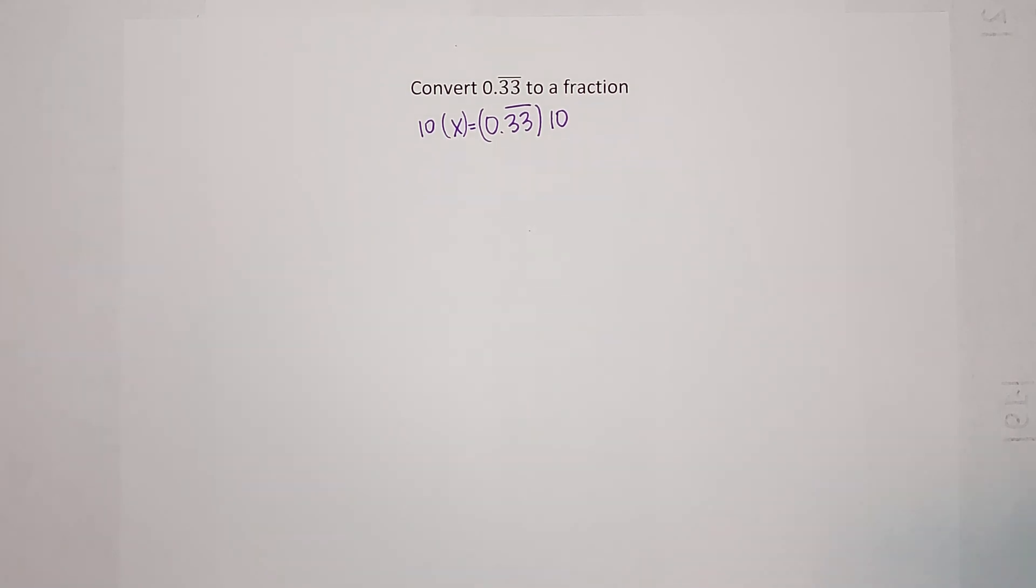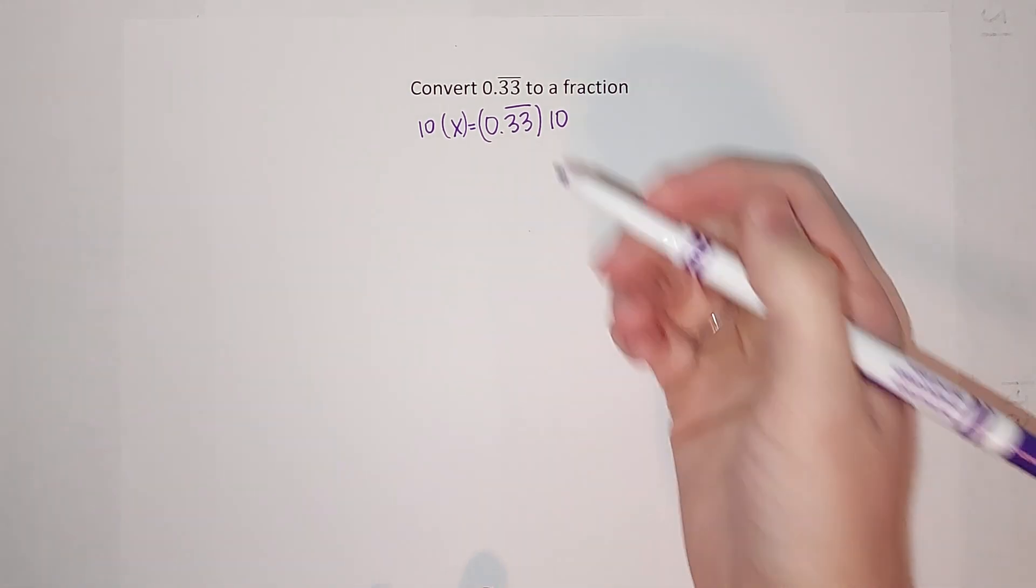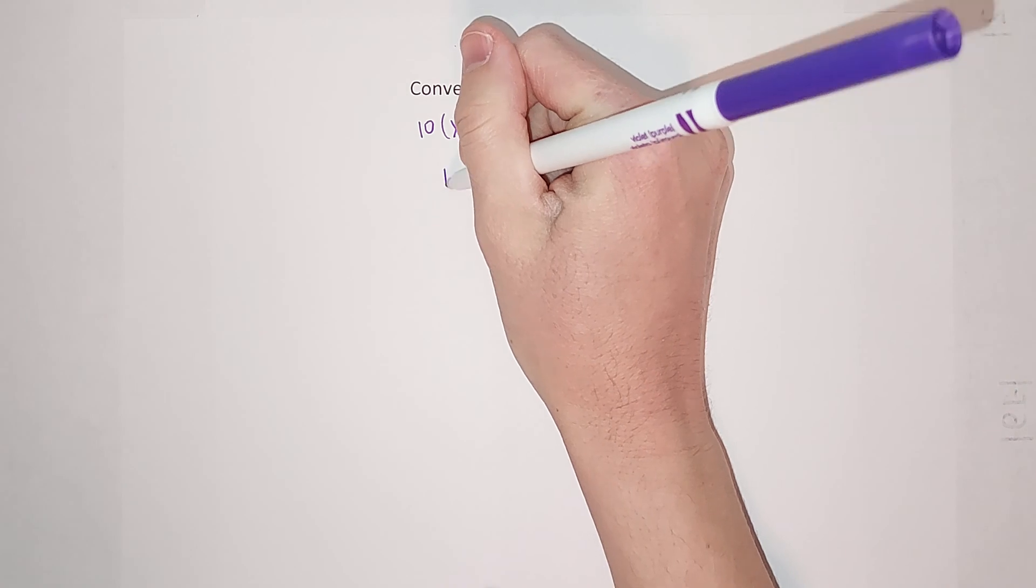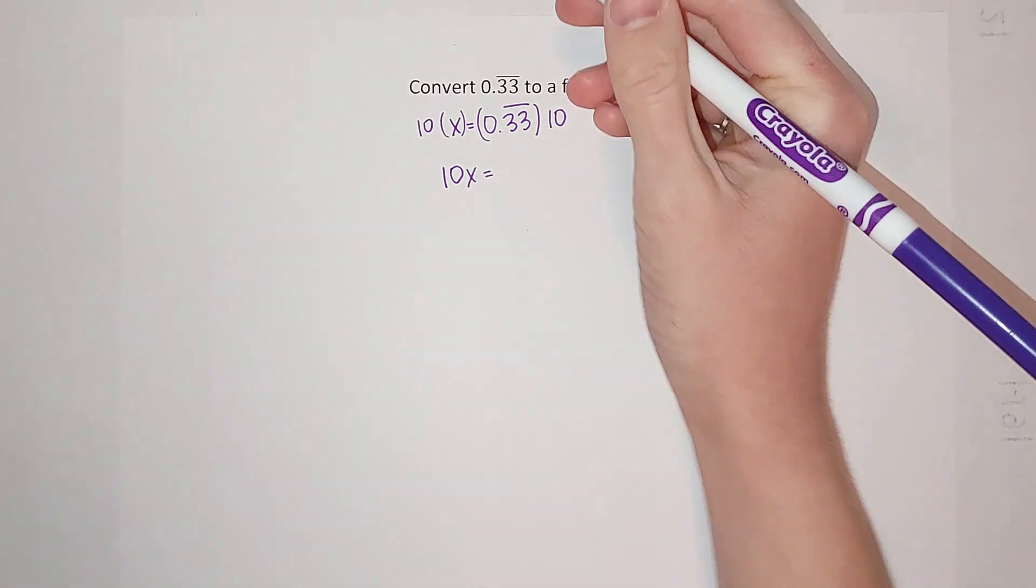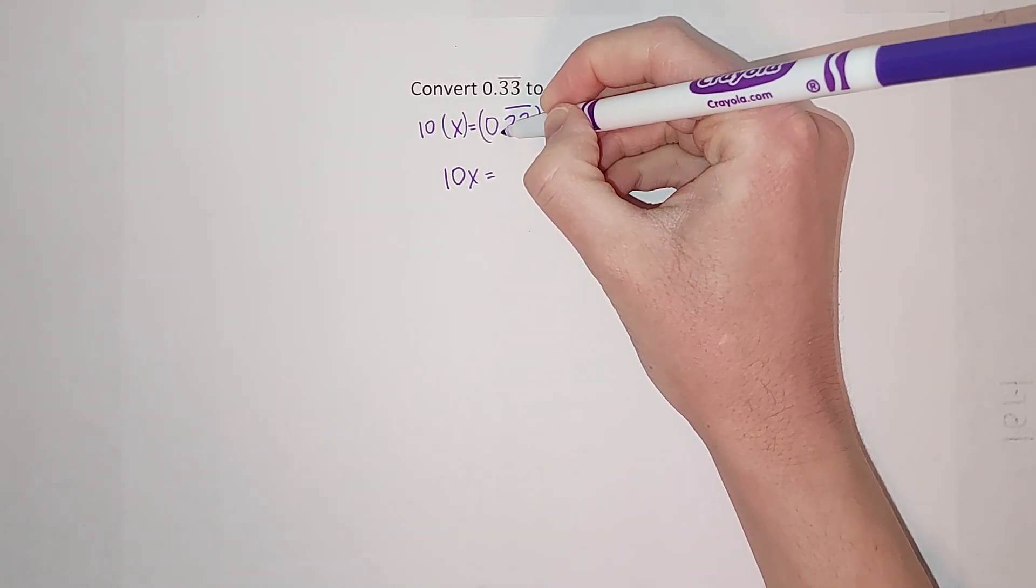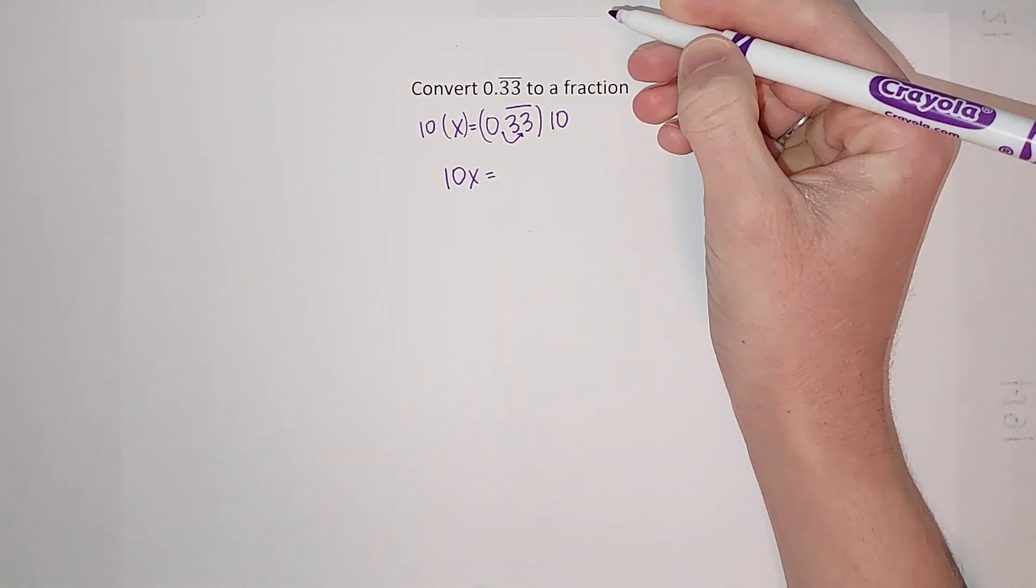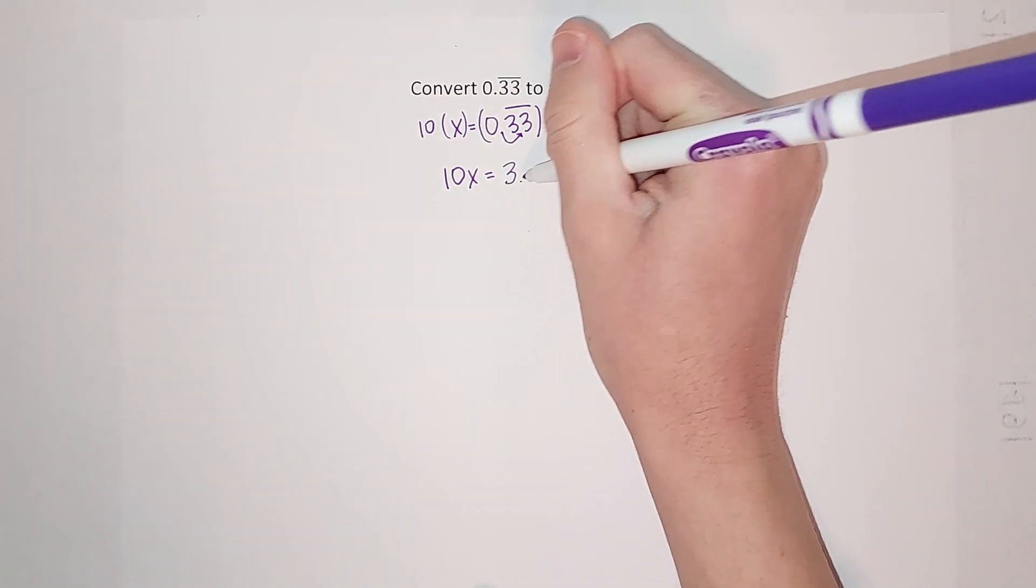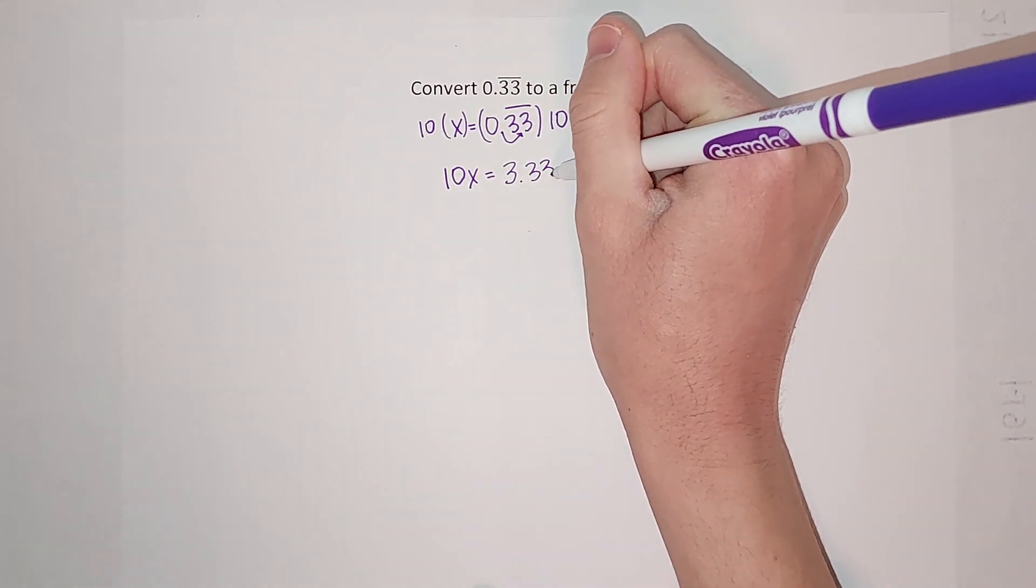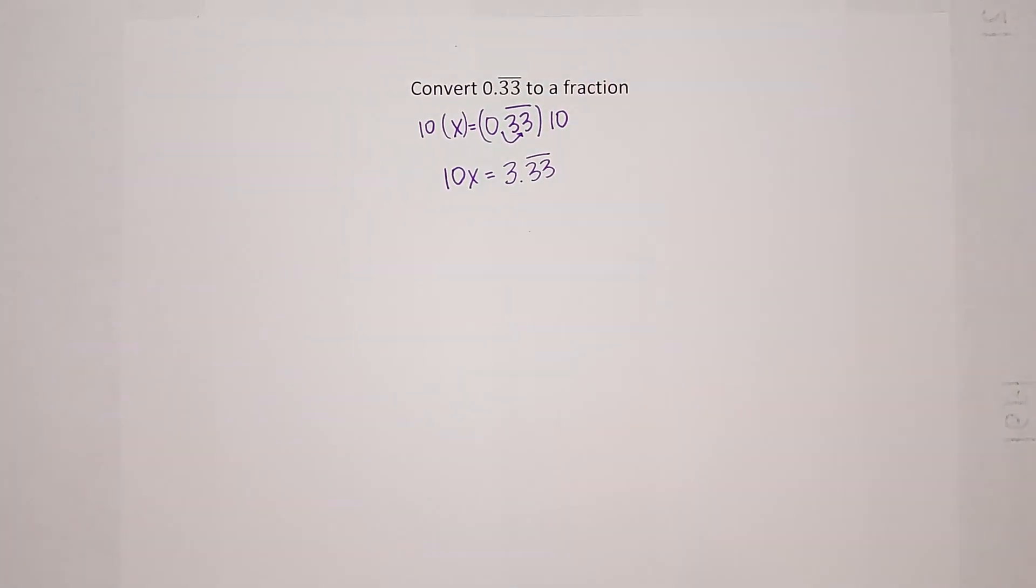If I do it to one side, I gotta do it to the other. So watch what happens when I do that. This side has 10x equals, and when I multiply this by 10 it just moves this decimal place to the right one. So it'll be 10x equals 3.33 repeating.